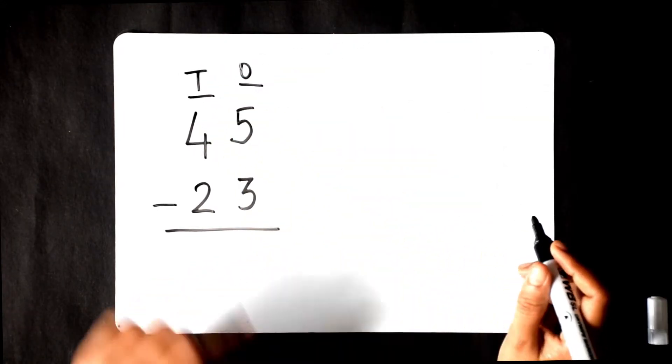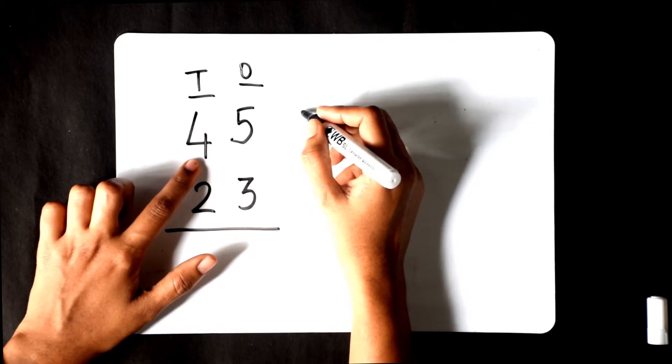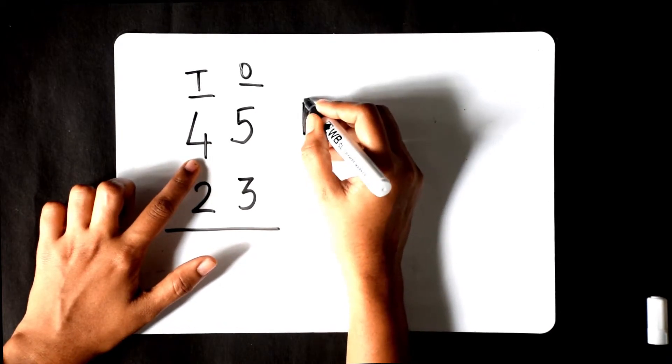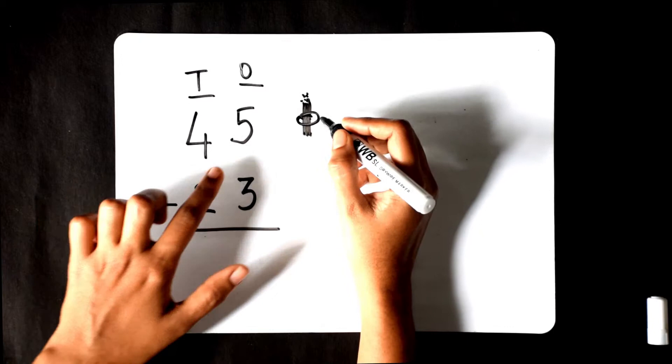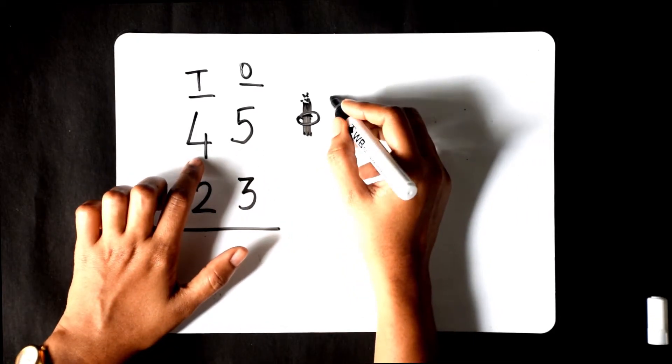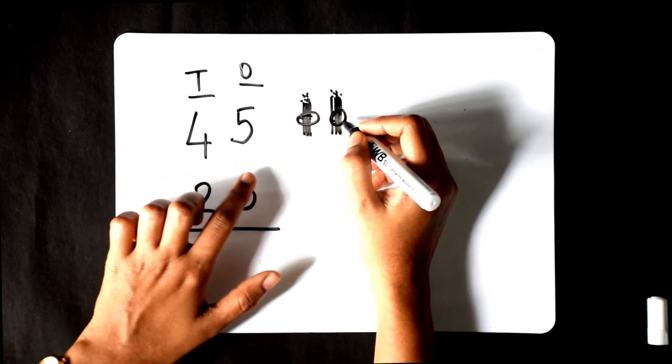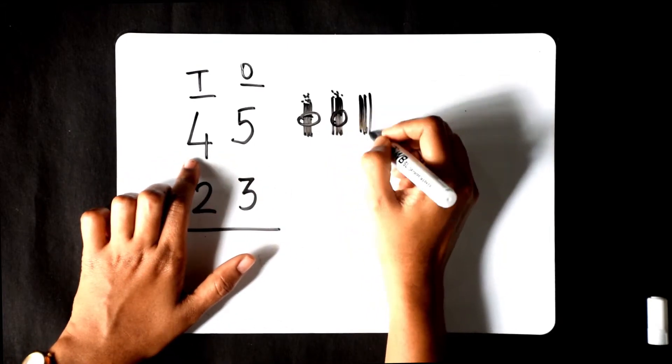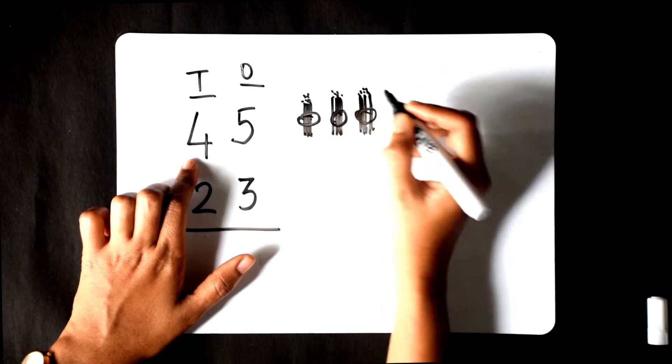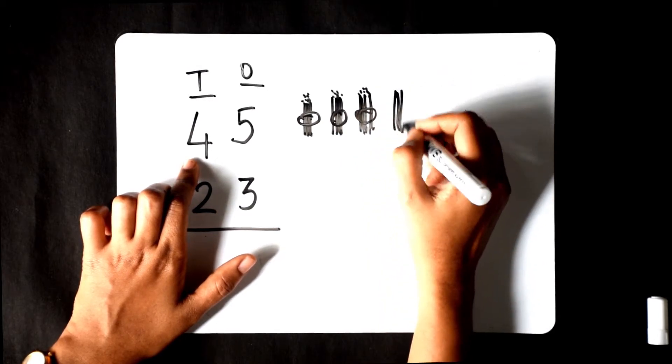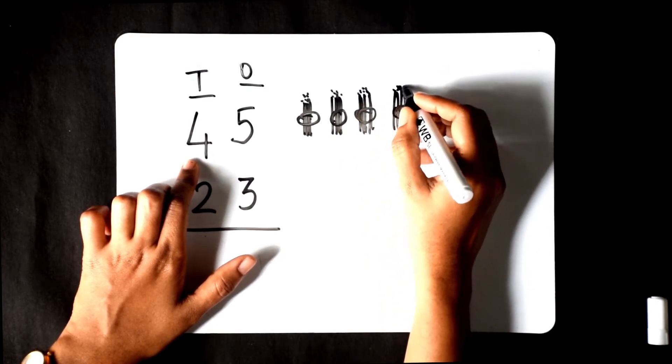To represent 45, we are going to take 4 tens. This is a rough representation of the bundle of tens: 1 tens 10, 2 tens 20, 3 tens 30, and 4 tens 40.